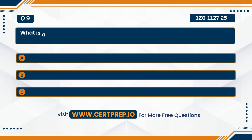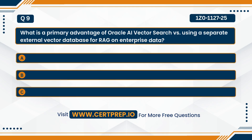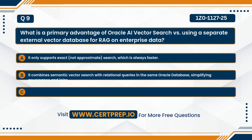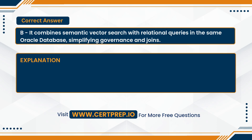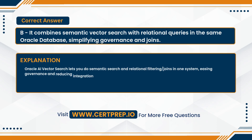Question nine. What is a primary advantage of Oracle AI Vector Search versus using a separate external vector DB for RAG on enterprise data? A. It only supports exact, not approximate search, which is always faster. B. It combines semantic vector search with relational queries in the same Oracle database, simplifying governance and joins. Or C. It eliminates the need to create any indexes for similarity search. The correct answer is B — it combines semantic vector search with relational filtering and joins in one system, easing governance and reducing integration overhead.